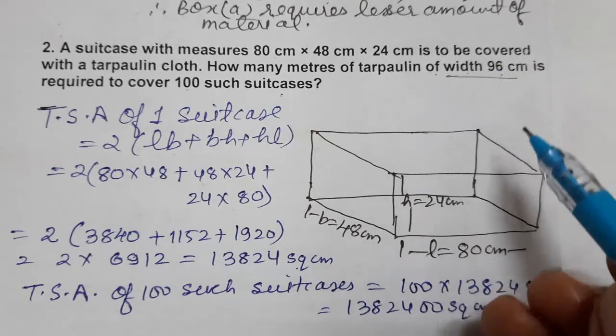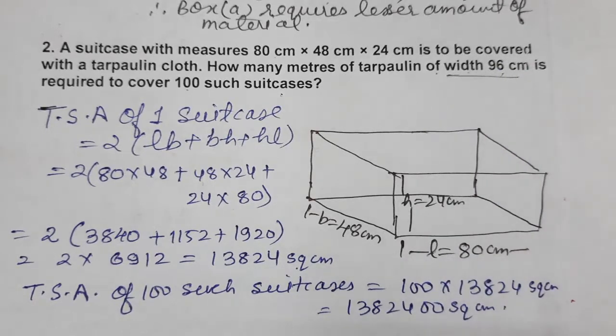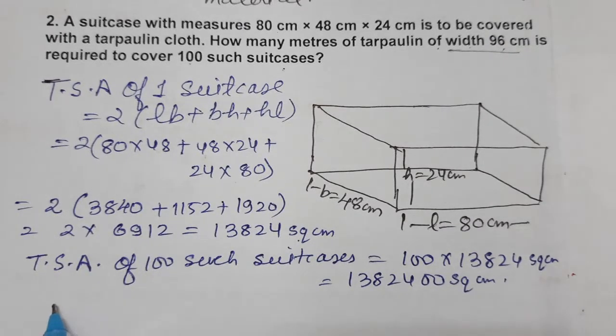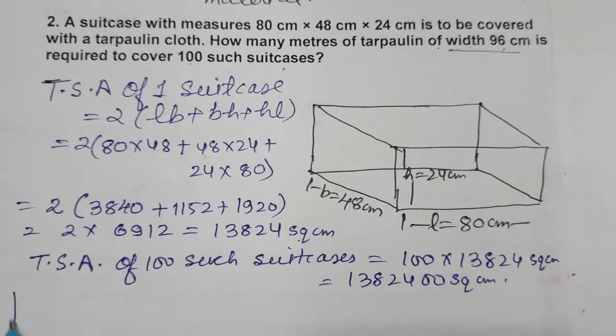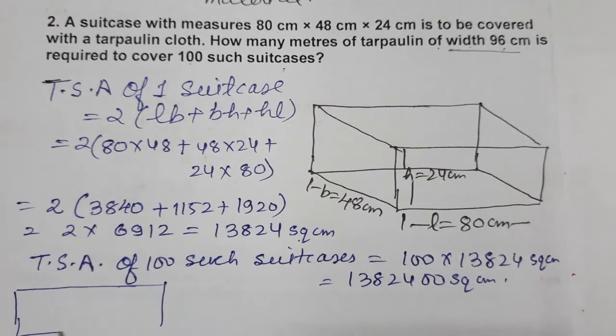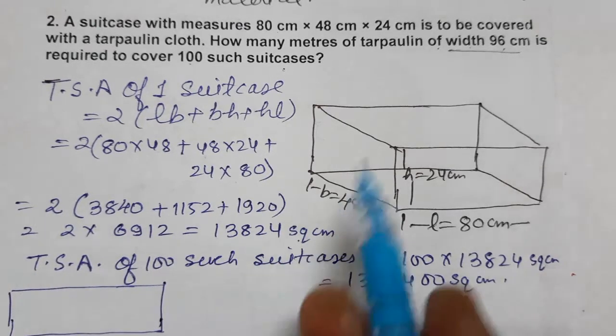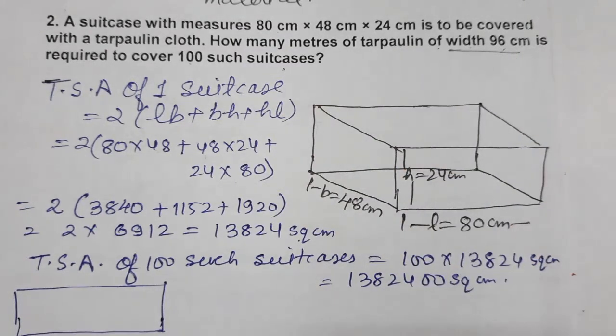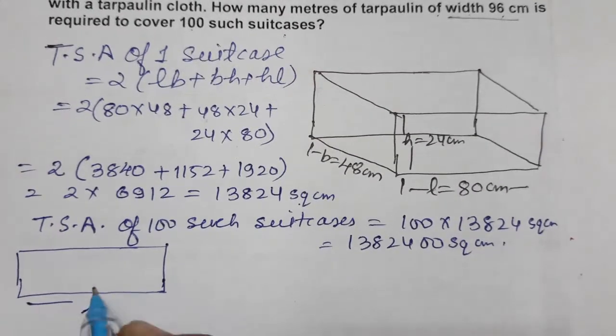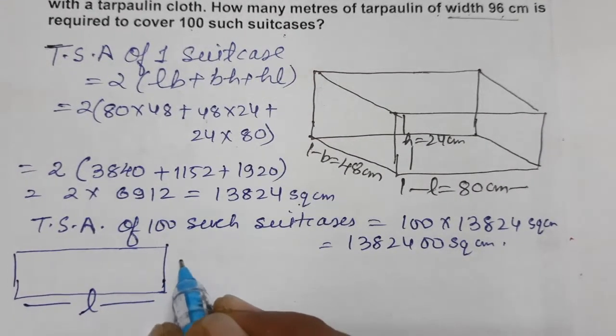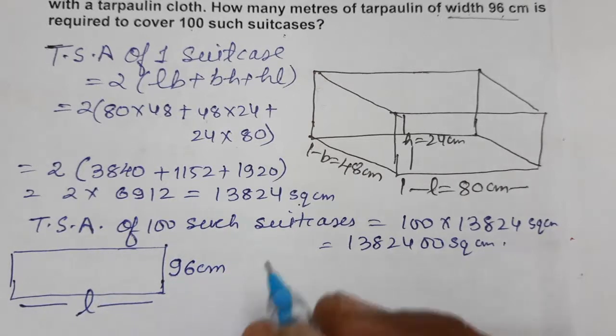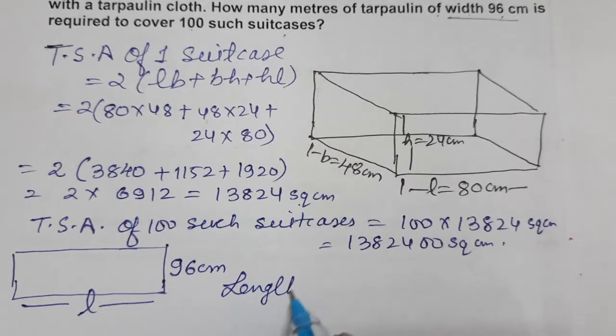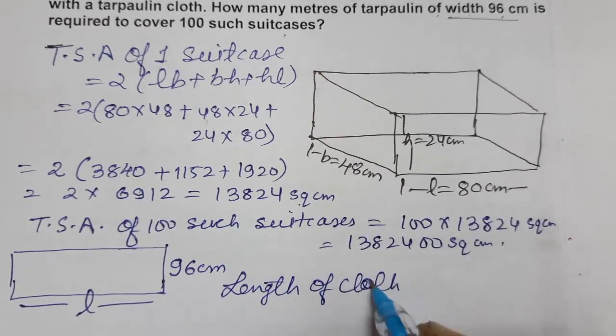We need to find the length in meters. When we purchase cloth from the market, it comes in rectangular shape with length and breadth. This is the length, and the width is given to us directly as 96 cm. To find the length of cloth required, we calculate total surface area divided by width.